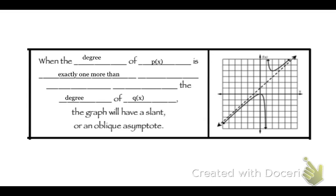When the degree of p(x) — the top — is exactly one more than the degree of q(x) — the bottom — the graph will have a slant or an oblique asymptote.